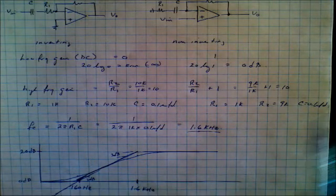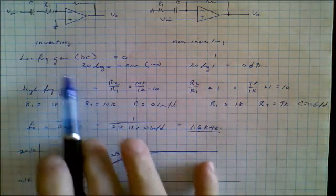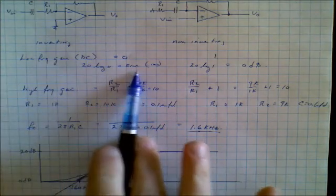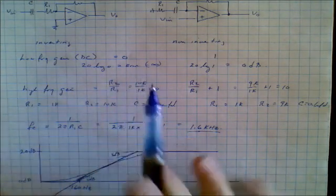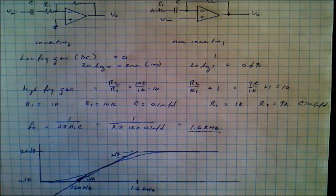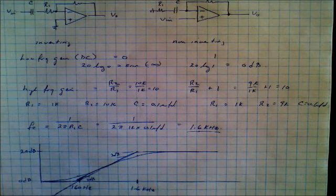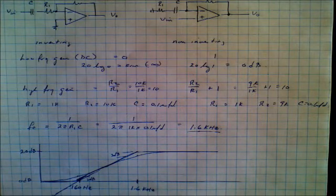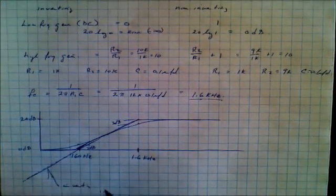So, which one is which? Well, notice that it's the inverting amplifier that has the signal which goes down and down and down to minus infinity dB. So this represents the inverting response. Inverting response.